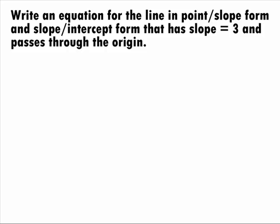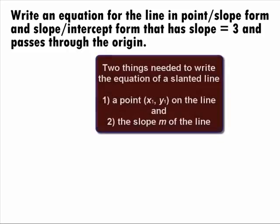There are always two things that we need to write an equation of a slanted line. One is a point x1, y1 on the line and the other is the slope m of the line.